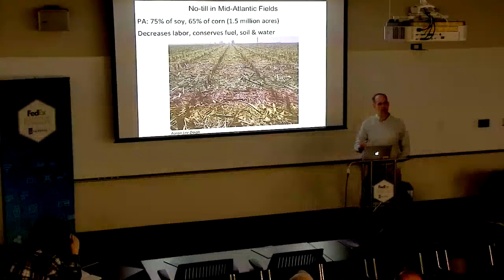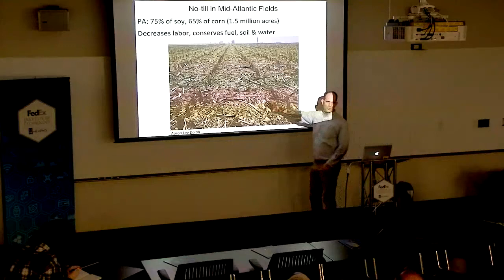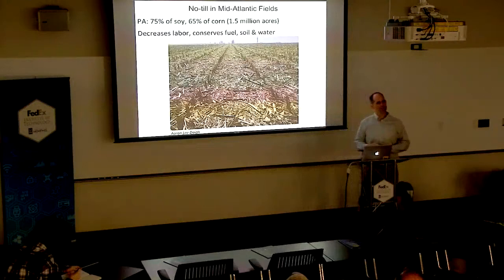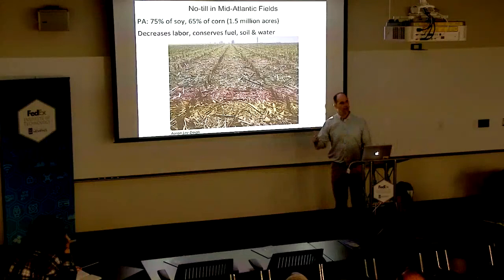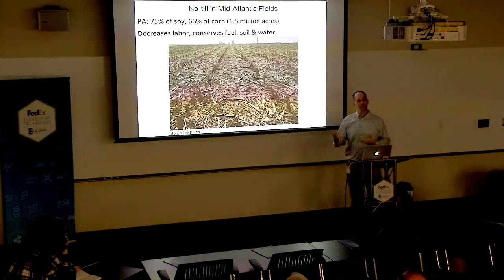We'll start by talking about no-till agriculture. Pennsylvania is a no-till state — most of our fields don't see plows. This is a no-till cornfield, and residue can build over time because the soil is never turned over. About three-quarters of our large acreage crops in Pennsylvania are not plowed — corn, soy, wheat, alfalfa, and the like.